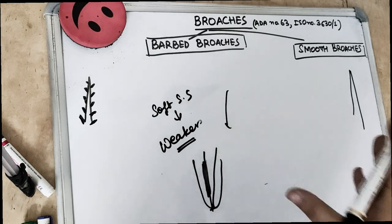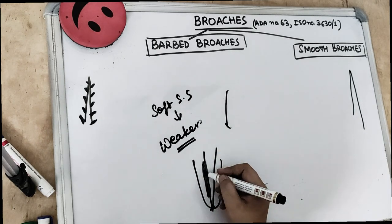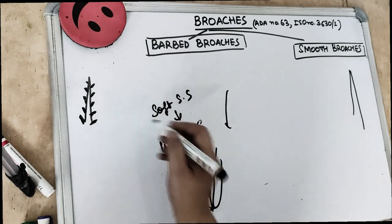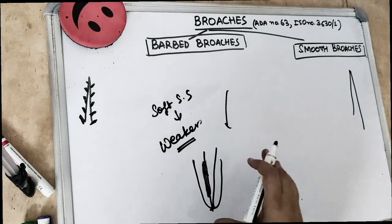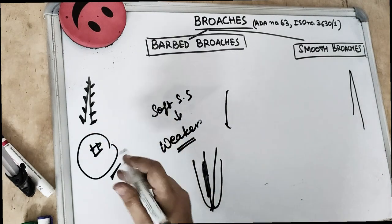because these are made from the soft stainless steel wire, they can stick on the dentinal wall. And once these spikes get stuck on the dentinal wall, there are high chances that the broach may fracture. Then it's going to be a trouble for us.